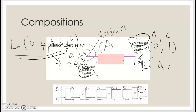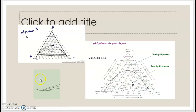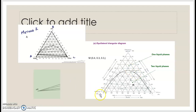After you obtain all the compositions for each inlet and outlet stream, you need to plot them on the equilateral triangle diagram. On this graph, you need to determine where A, B, and C are located — it depends on your specific graph. For example, one vertex may be C, another B, and ethylene glycol might be your A. There is no right or wrong — it depends on your graph.